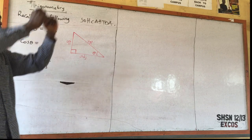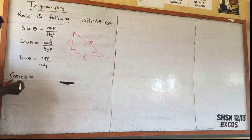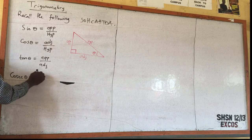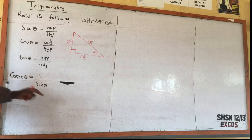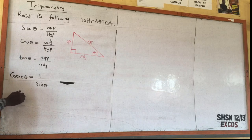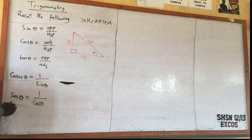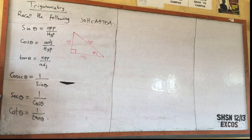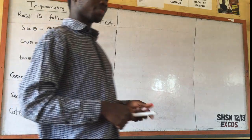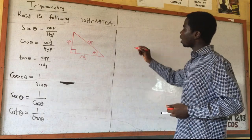There is something you need to know. There is something called cosec theta. Cosec theta is the inverse of sine theta — whenever you see cosec, it means 1 over sine theta. The next one is sec — when you see sec, it is 1 over cos theta. And the last one is cot — this is 1 over tan theta. So cosec is 1 over sine theta, sec is 1 over cos theta, and cot is 1 over tan theta.